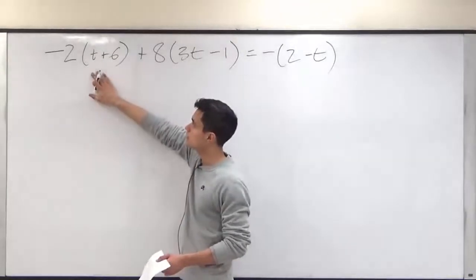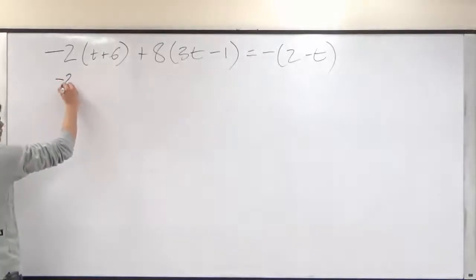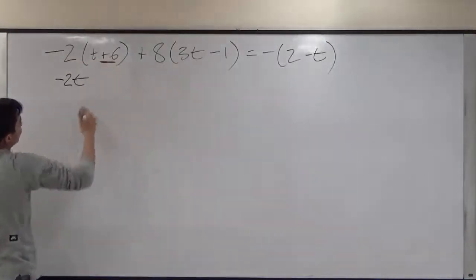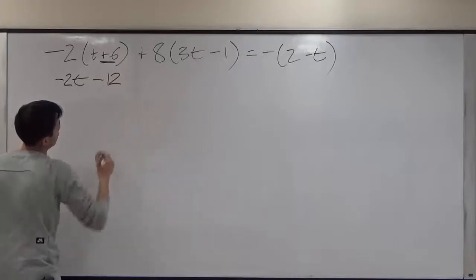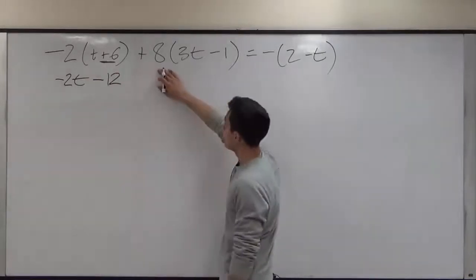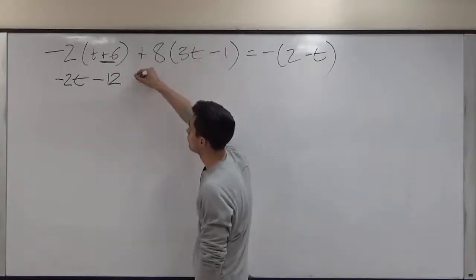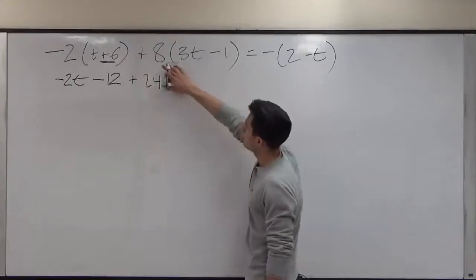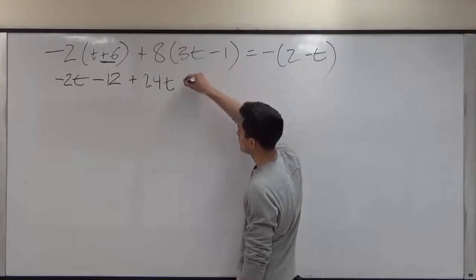Negative 2 times t will just give us negative 2t. Negative 2 times positive 6 will then just give us negative 12. Positive 8 times 3t will give us positive 24t. Positive 8 times negative 1 will give us negative 8.